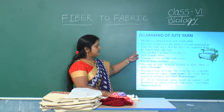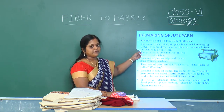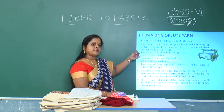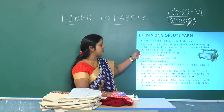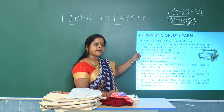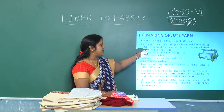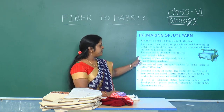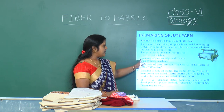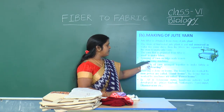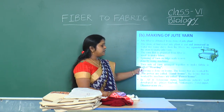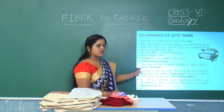Making of jute yarn. Jute fiber is obtained from the stem of the jute plant. The stem of the harvested jute plant is cut and then soaked in water for some days. Then the fibers are separated to form jute yarn. The yarn prepared from the fiber is used to make fabric. Spinning of yarn on a large scale is now done using machines.